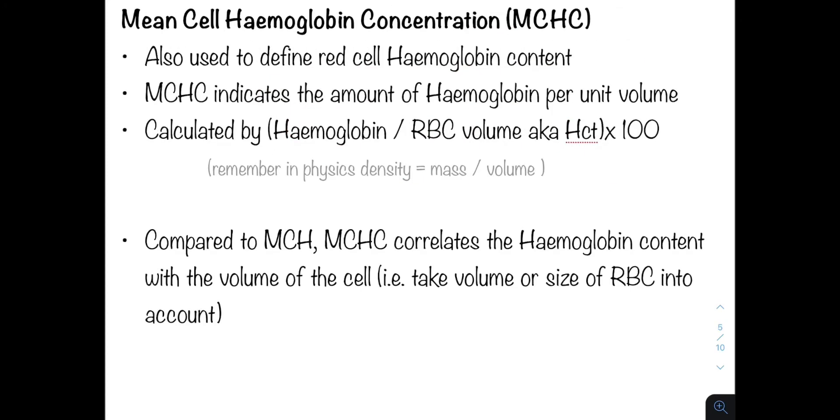Next we have the mean cell hemoglobin concentration or the MCHC. This is used to define red cell hemoglobin content. However, compared to the MCH, the MCHC indicates the amount of hemoglobin per unit of volume. Remember the MCH is the mean corpuscular hemoglobin per red cell.